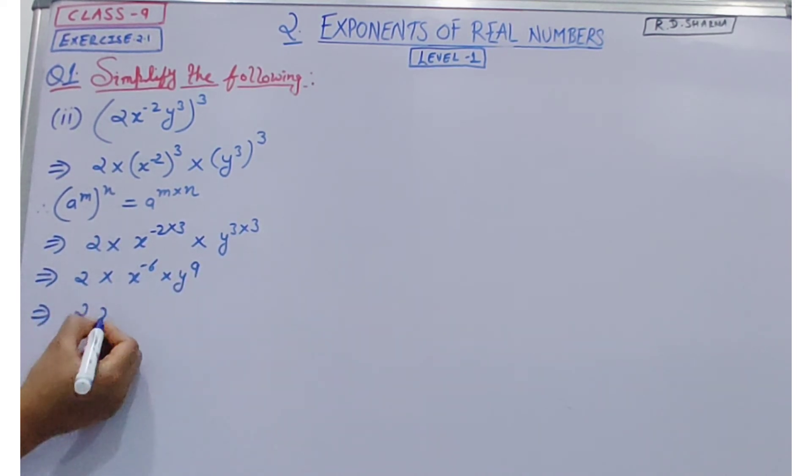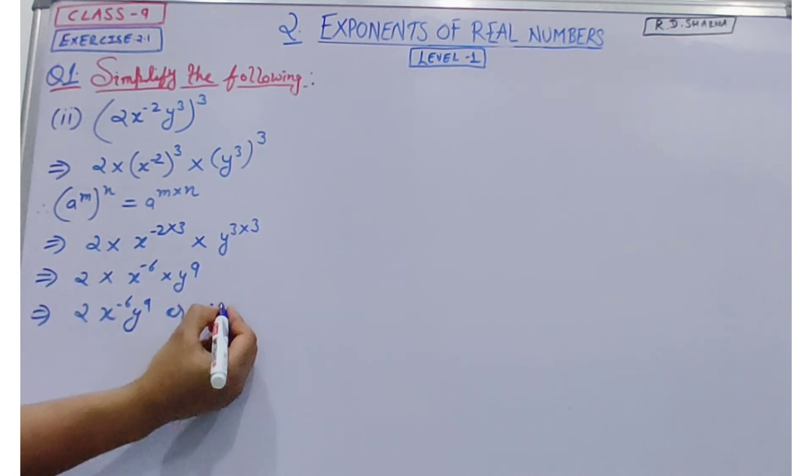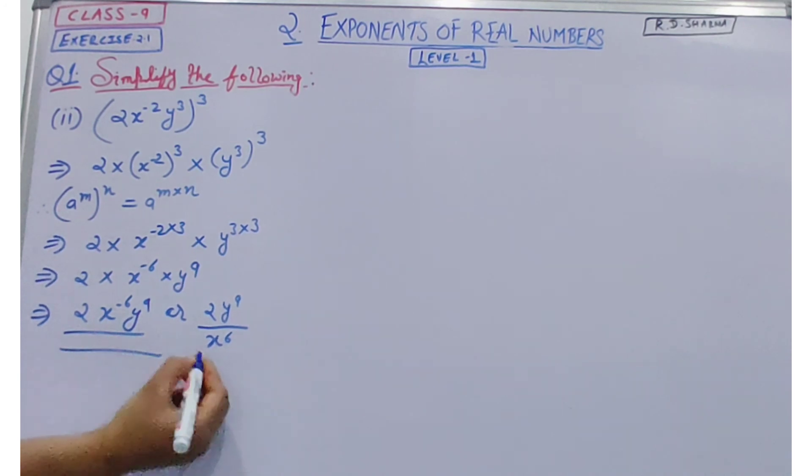So our answer is 2x to the power minus 6 y to the power 9, or 2y to the power 9 divided by x to the power 6. So this is our answer of question number 2.